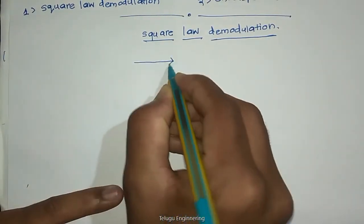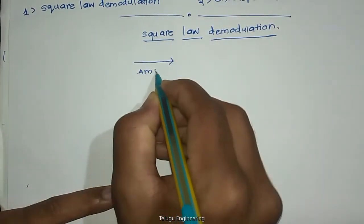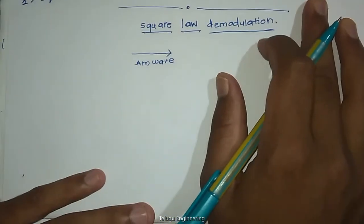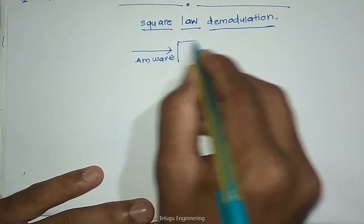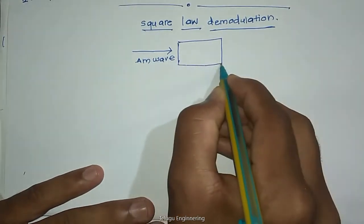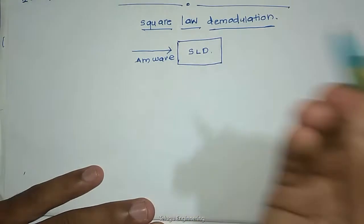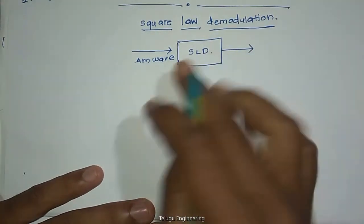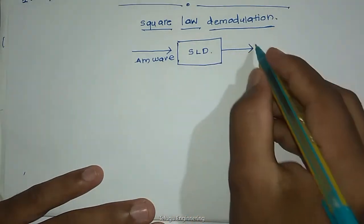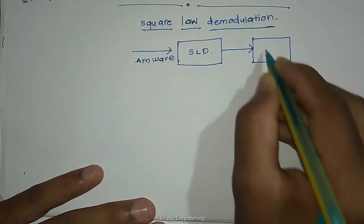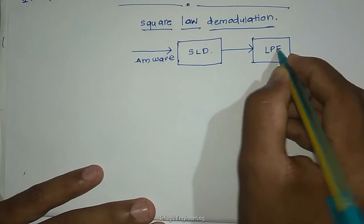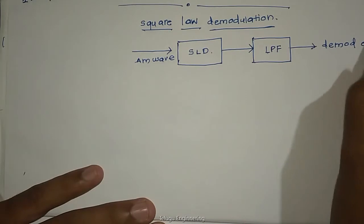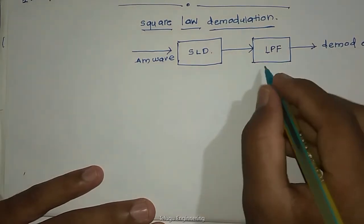So, first the block diagram. Here we have the AM wave, the standardized AM wave like this type. We will be passing it through a square law device. After passing through the square law device, the output goes to a low pass filter, and after that we will get the demodulated output.